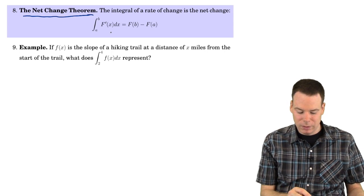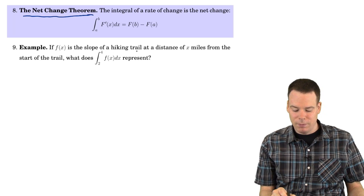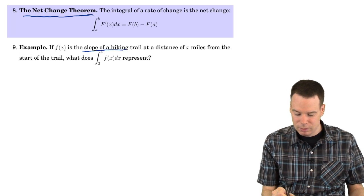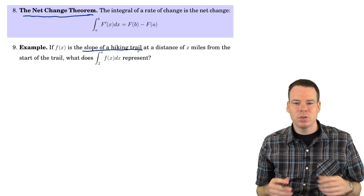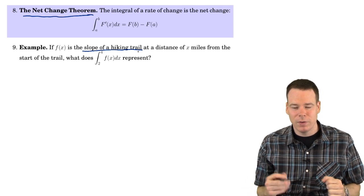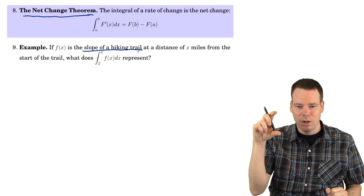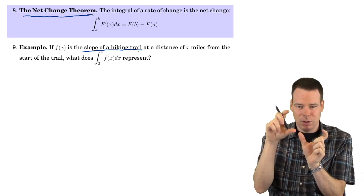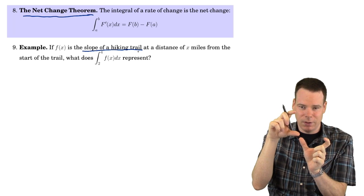So how could this be useful? Let's look at a couple of examples. Suppose f(x) is the slope of a hiking trail. The slope of a hiking trail is a rate of change — specifically, the rate of change in elevation over the horizontal distance traveled.